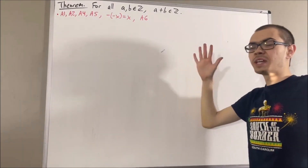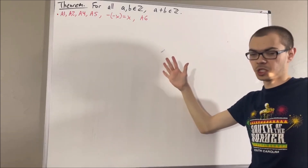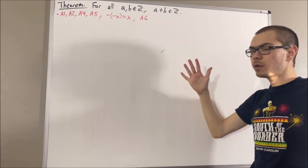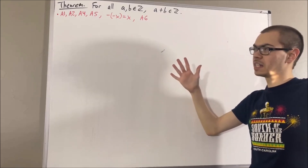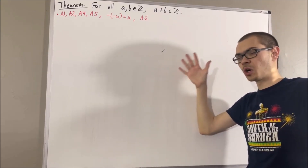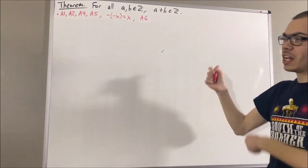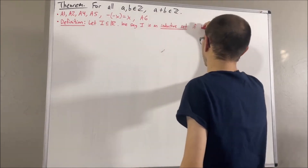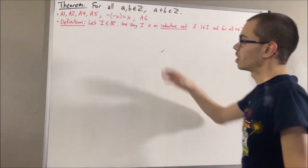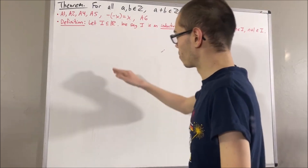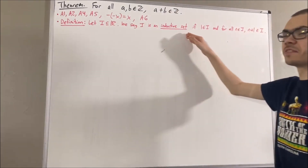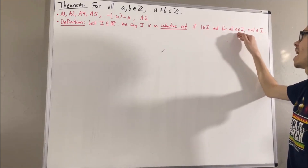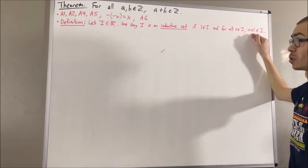In our real number system, we have defined the positive integers as a subset of the real numbers. The way we defined it was we first defined a special type of subset of real numbers called an inductive set. Let i be a subset of the real numbers. We say i is an inductive set if 1 is an element of i, and for all elements n in i, we have that n plus 1 is an element of i.